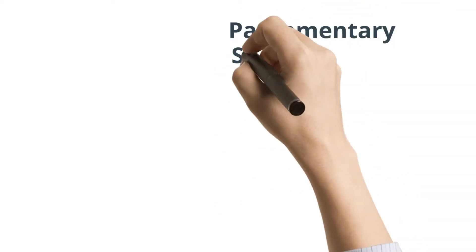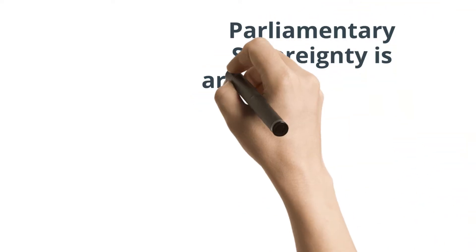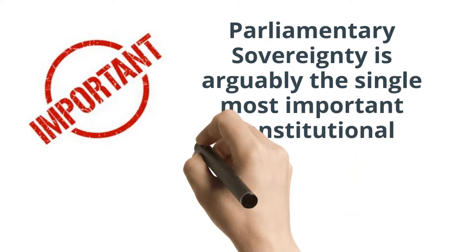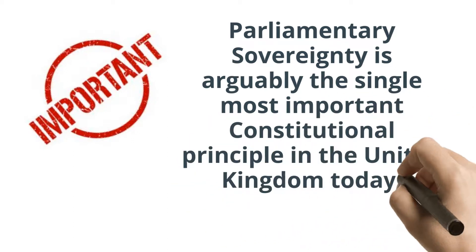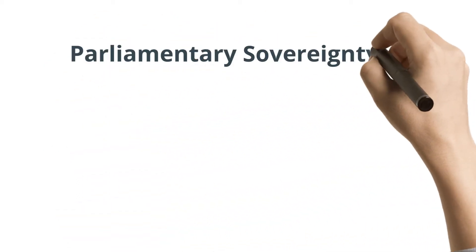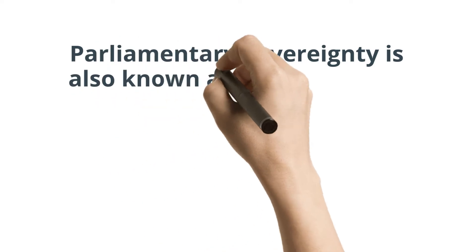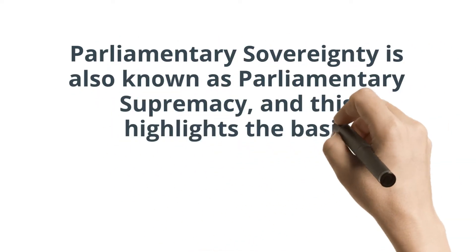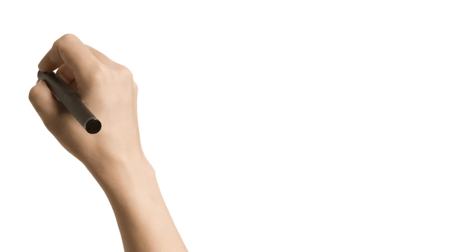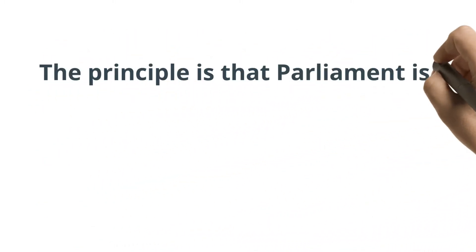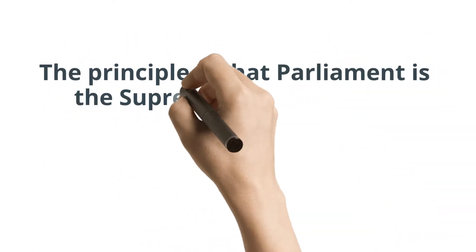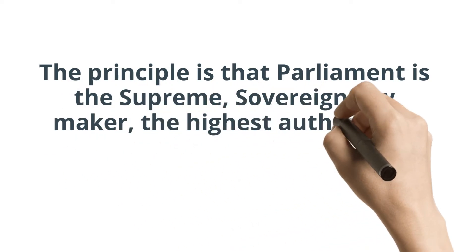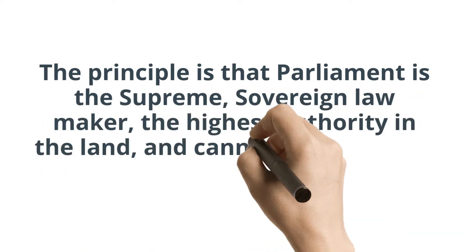Parliamentary sovereignty is arguably the single most important constitutional principle in the United Kingdom today. Parliamentary sovereignty is also known as parliamentary supremacy, and this really touches on the basic principle. The principle is that Parliament is the supreme, sovereign lawmaker, the highest authority in the land, and cannot be overruled.